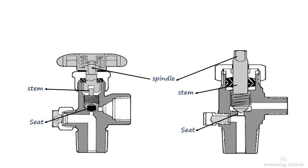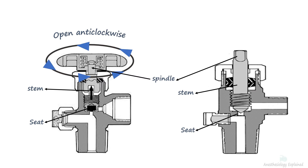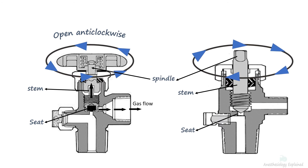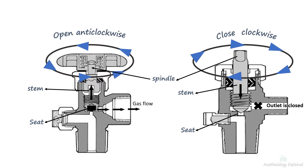To open the medical cylinder, the spindle of the stem is turned anticlockwise, causing the stem to move away from the seat, thereby allowing the gas to pass through the port. In contrast, to close the cylinder, the spindle of the stem is turned clockwise, effectively sealing it against the seat and closing the outlet. This controlled operation ensures the safe and precise regulation of gas flow from the cylinder.